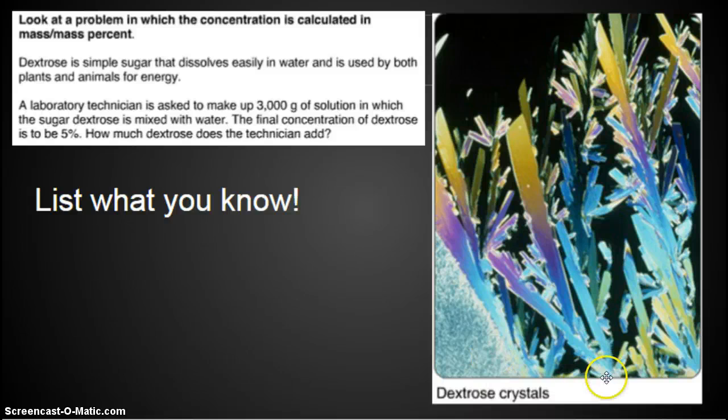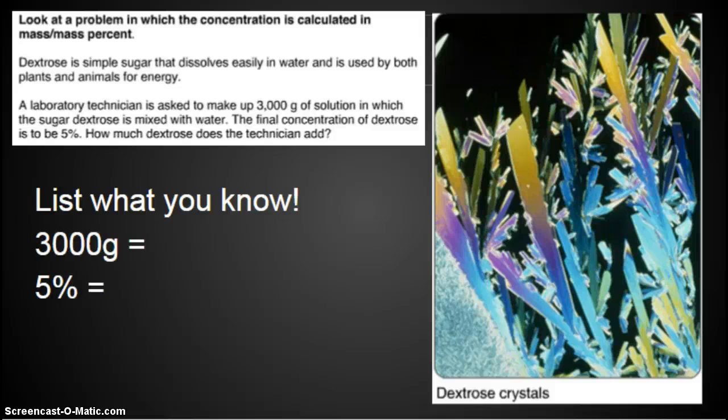So because my total solution was 100 grams, 10 grams also happens to be 10 percent. All right, so let's do a problem that's a little bit harder. This is dextrose crystals. Any biological chemical that ends in 'ose' is a sugar. Dextrose is a sugar. Look at a problem in which concentration is calculated in a mass-mass percent. Dextrose is a simple sugar that dissolves easily in water and is used by both plants and animals for energy.